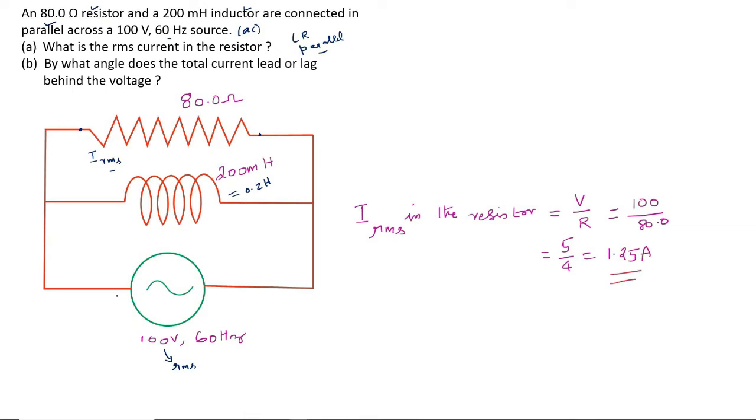Here you will have to note this voltage is available here because of the parallel combination. You can take voltage across the resistor or RMS voltage across the resistor is same as the RMS value of voltage of the source. Therefore, 1.25 ampere.